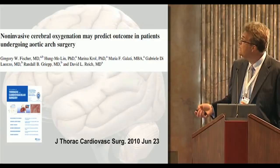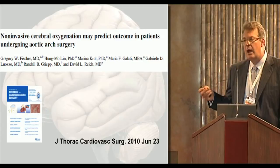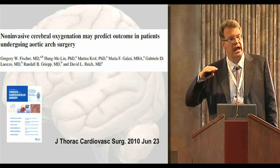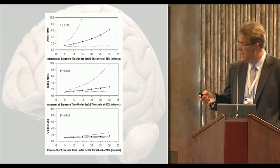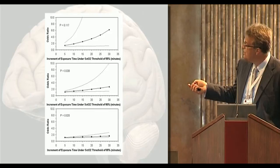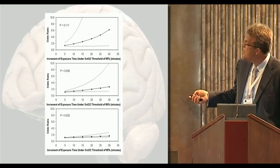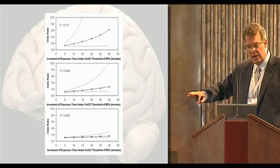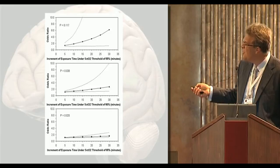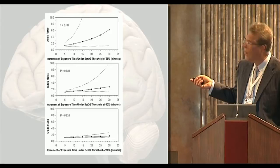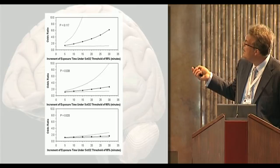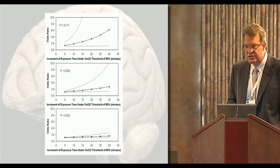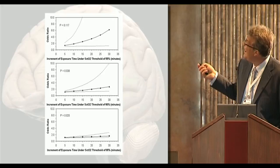This paper just published in JTCVS looked at the same cohort to identify thresholds under which patients start having more problems. Looking at threshold values of 65%, 60%, and 55%, you can see patients who spent 10, 15, or 20 minutes cumulatively under these thresholds throughout the whole surgical period — not just the DHCA. At 65%, there's almost no increase in adverse outcome. At 60%, at 30 minutes, there's maybe a 3 to 4 times higher likelihood of an adverse event. At 55% and 30 minutes, it's 6 to 8 times higher likelihood.